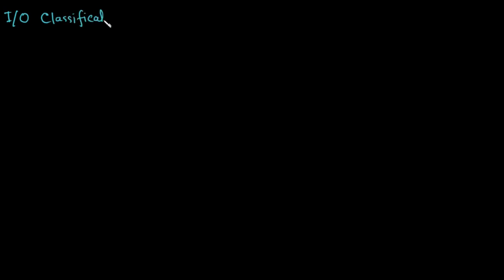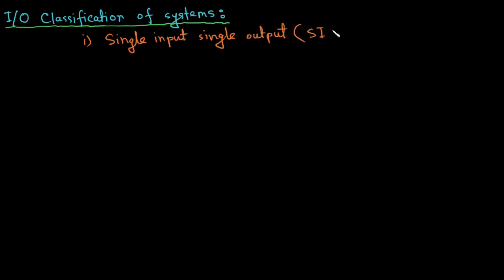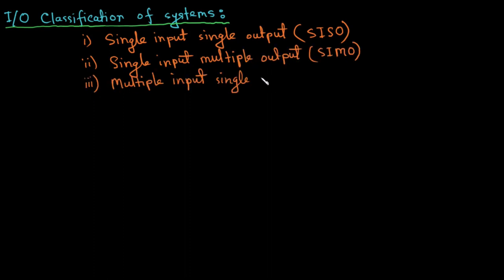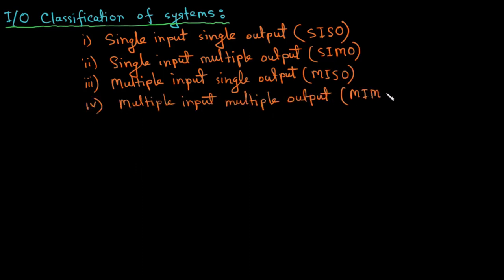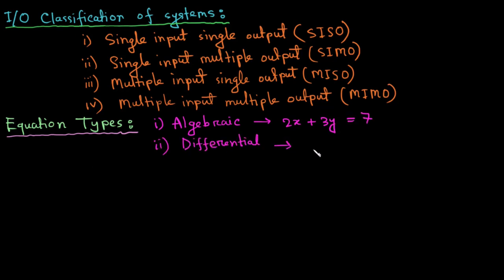Depending on input output classification, a system can be four types. Number one single input single output SISO system, number two single input multiple output SIMO system, number three multiple input single output MISO system and number four multiple input multiple output MIMO system. To solve a system, we need the help of mathematical equations. There are mainly three types of mathematical equations and those are algebraic equation, differential equation and finally integral equation.